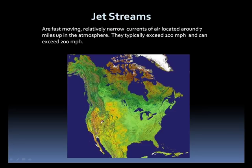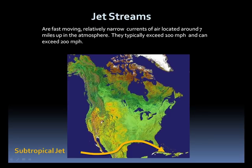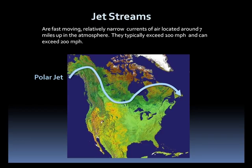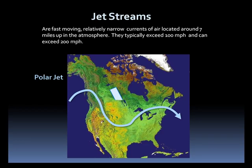In North America, there are two branches of the jet stream that affect the continent. One is the subtropical jet, which generally stays across the far south but can reach up into the southern one-third of the United States. To the north is the polar jet, and it's the jet that influences our weather the most. As the seasons transition from fall to winter, the polar jet usually sinks farther south, allowing for colder air to flow southward. The jet can sink far enough south that freezing temperatures impact the Gulf states.